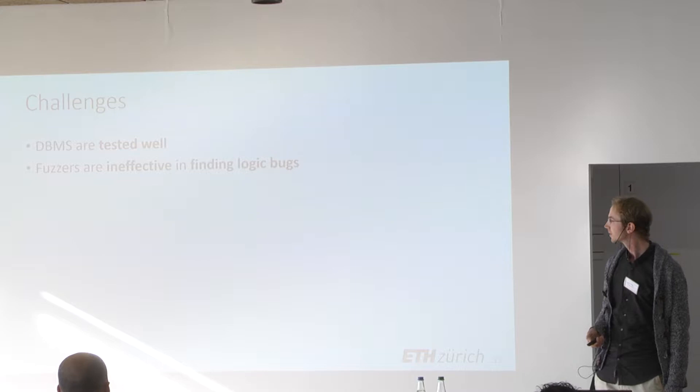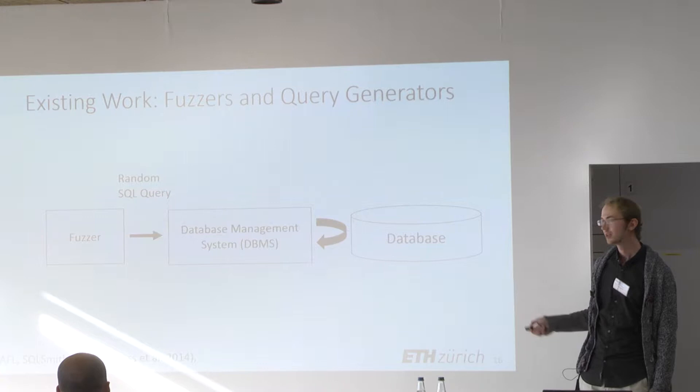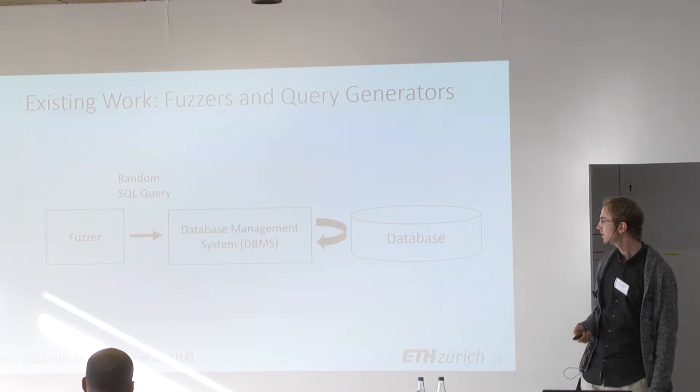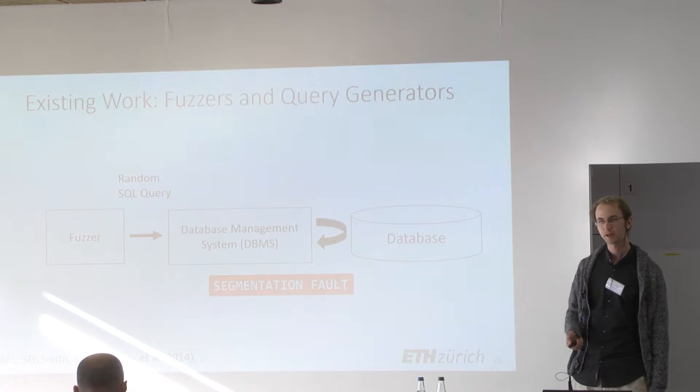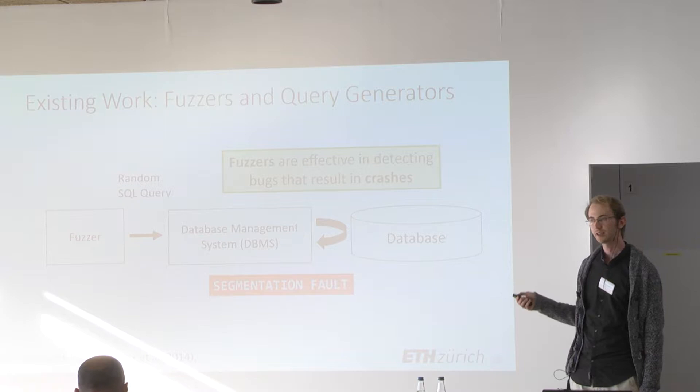Furthermore, fuzzers are ineffective in finding logic bugs. Fuzzers like AFL generate random strings; there are also SQL-specific fuzzers that generate random SQL queries fed to the database management system hoping to trigger a crash — for example, a segmentation fault from a buffer overflow or a division-by-zero error. Fuzzers are effective in detecting such crash bugs, but unfortunately they cannot detect the logic bugs that we want to find.